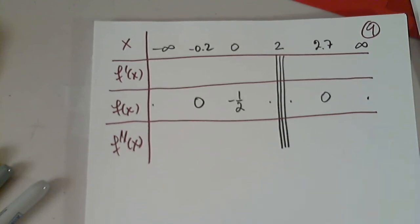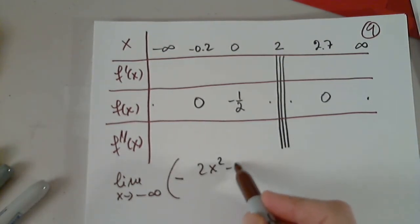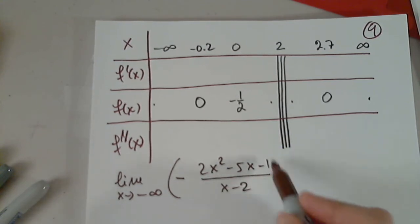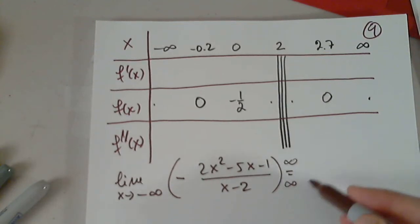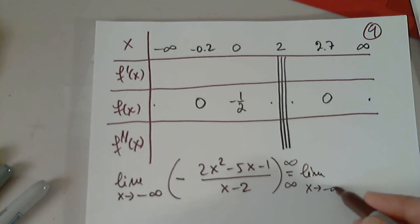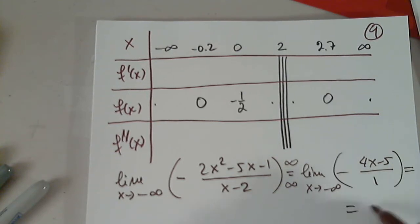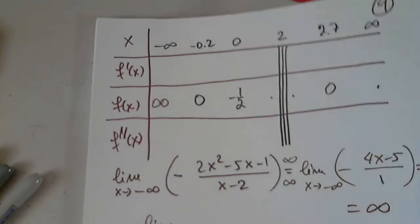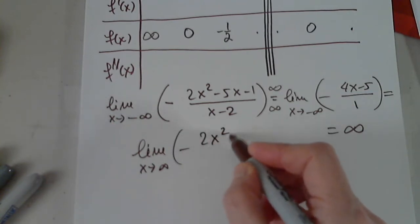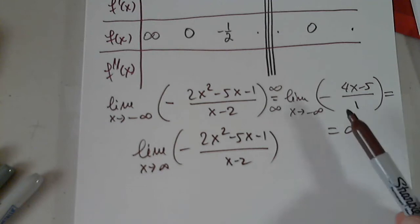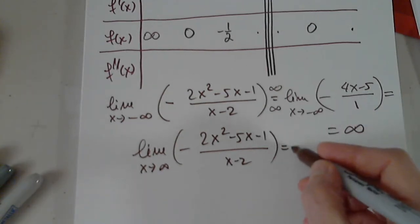So the limit as x approaches negative infinity from negative 2x squared minus 5x minus 1 over x minus 2. L'Hôpital's rule, as x approaches negative infinity, the top is 4x minus 5, and the denominator is 1. When x approaches negative infinity, this approaches negative infinity. It will be the reversed situation for limit when x approaches infinity from the function. Because I will get the same thing when I differentiate, but now I plug in infinity, so this will be negative infinity.